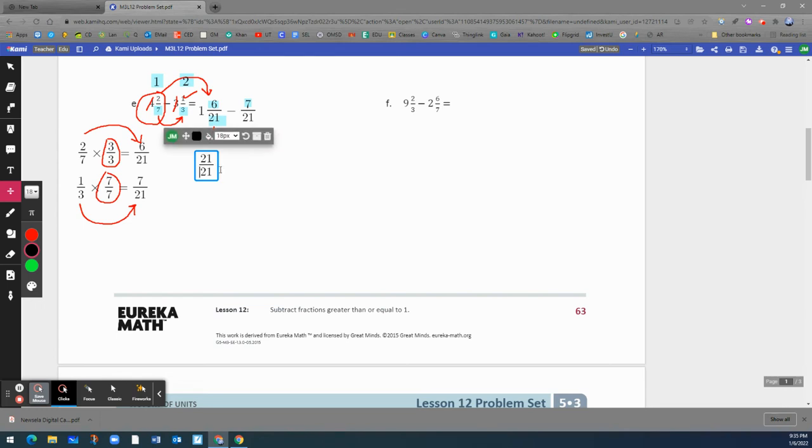Now, once we get that part, we can add the 6 twenty-firsts that was next to it. 6 twenty-firsts. Okay. Remember, let me just review really quickly. All we did is convert this mixed number into this fraction that is going to be, we're going to add it in a moment.